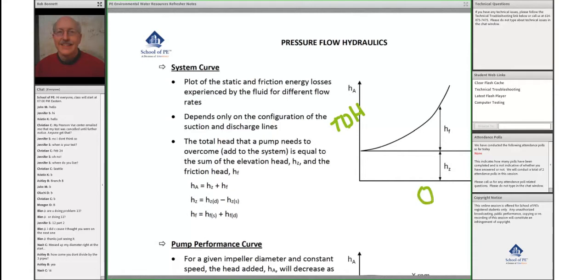So this is the system curve. The nonlinear plot comes up like this, primarily head loss due to friction.